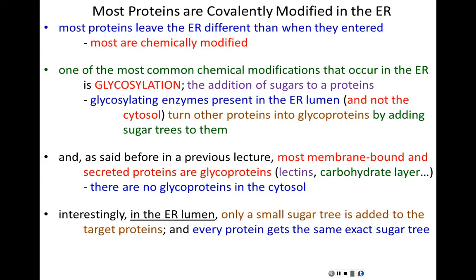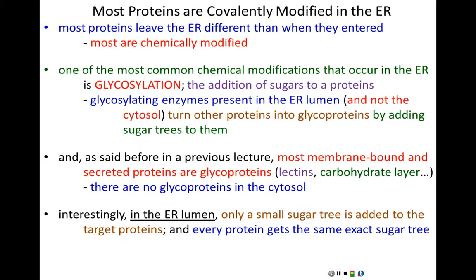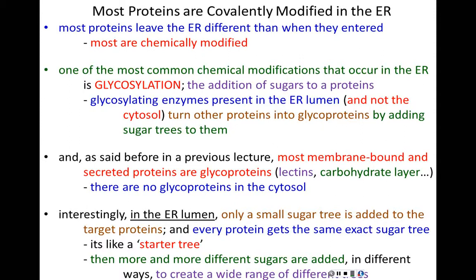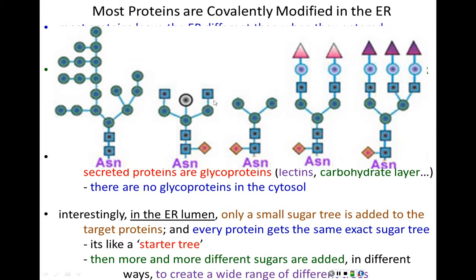In the ER lumen itself there's only a small starter sugar tree — every single glycosylated protein in the ER lumen gets the same small sugar tree added to it. This is almost like a starter tree. You can add more and more different sugars to that tree in different ways, increasing and enhancing it, creating a wide range of different sugar trees — but these modifications primarily occur in the Golgi. So that small starter tree is added in the ER lumen, and then expanded with further modifications.